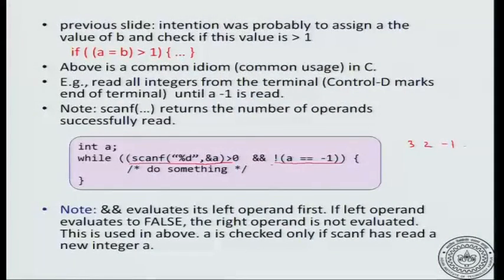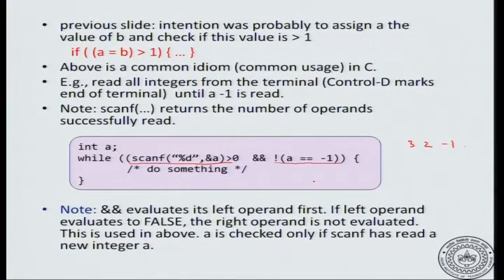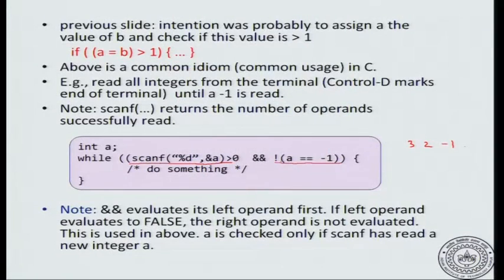The logical AND operation evaluates the left operand first. If this condition is false, then the whole expression is going to be false — if at least one of the terms is false, the whole thing is false. So it will not even evaluate the second operand. If the first operand is true, then it will check whether the second operand is true. This method of evaluation is called short-circuit evaluation, because it may not evaluate the whole expression in order to get the result.